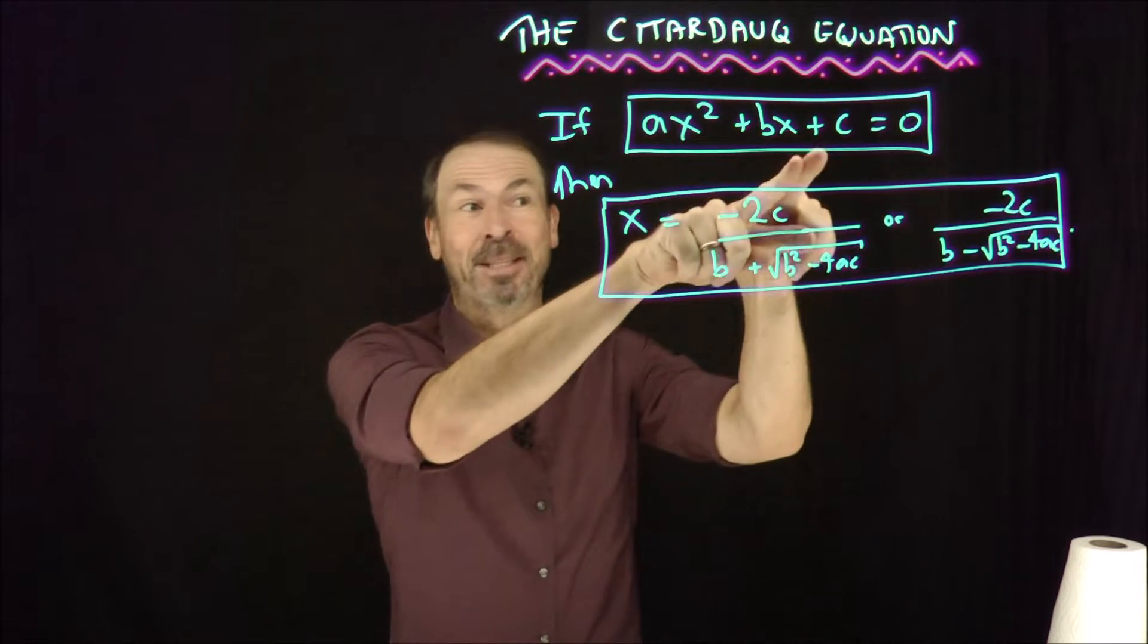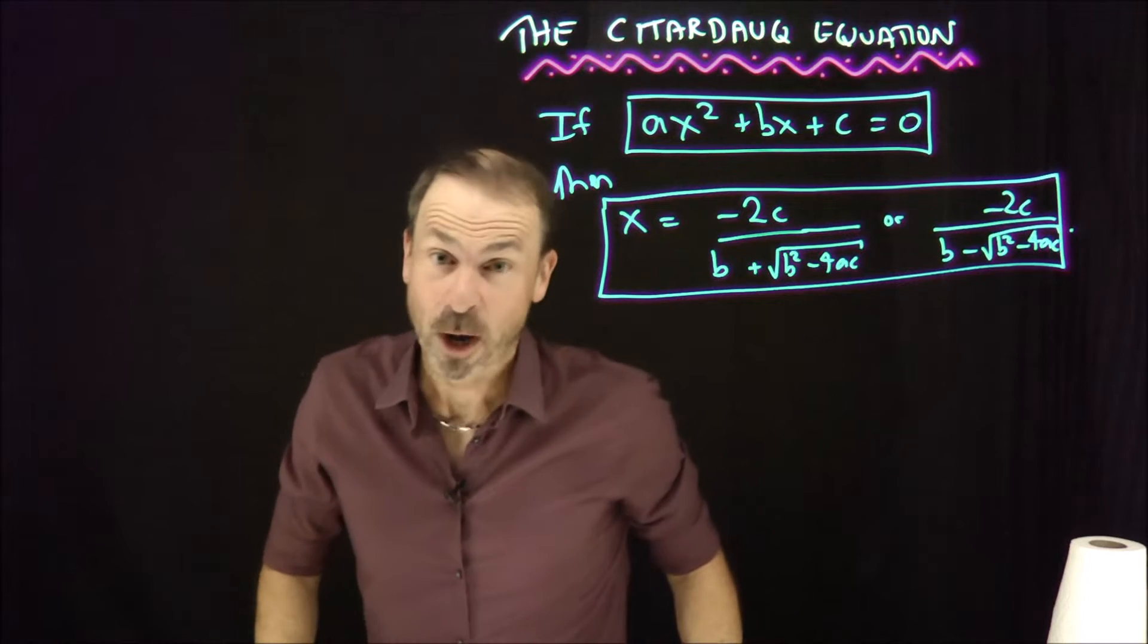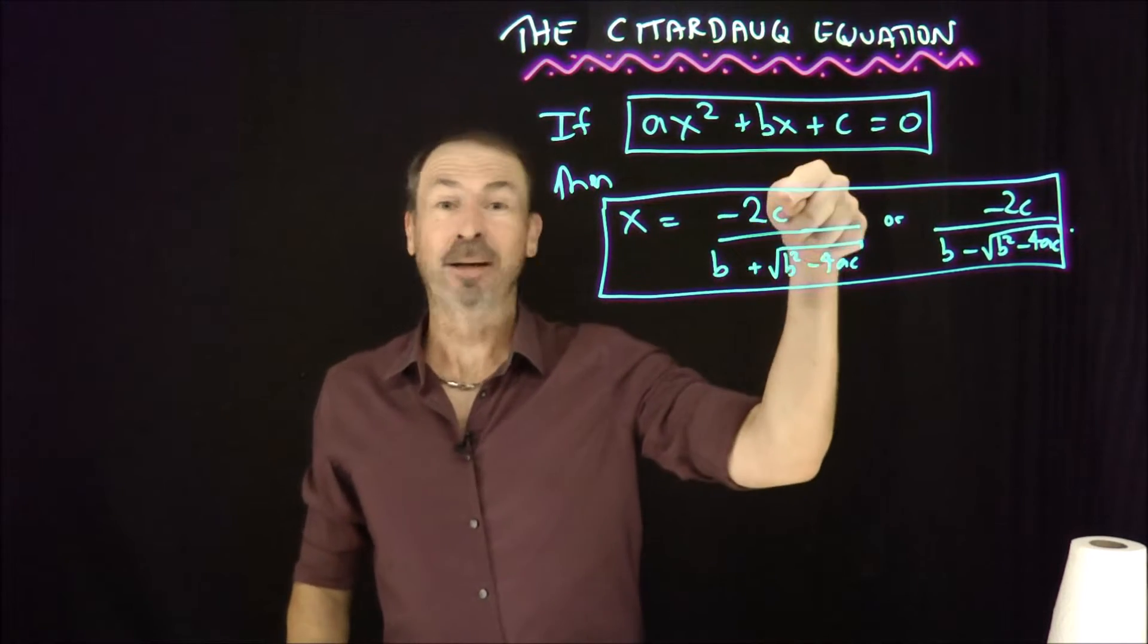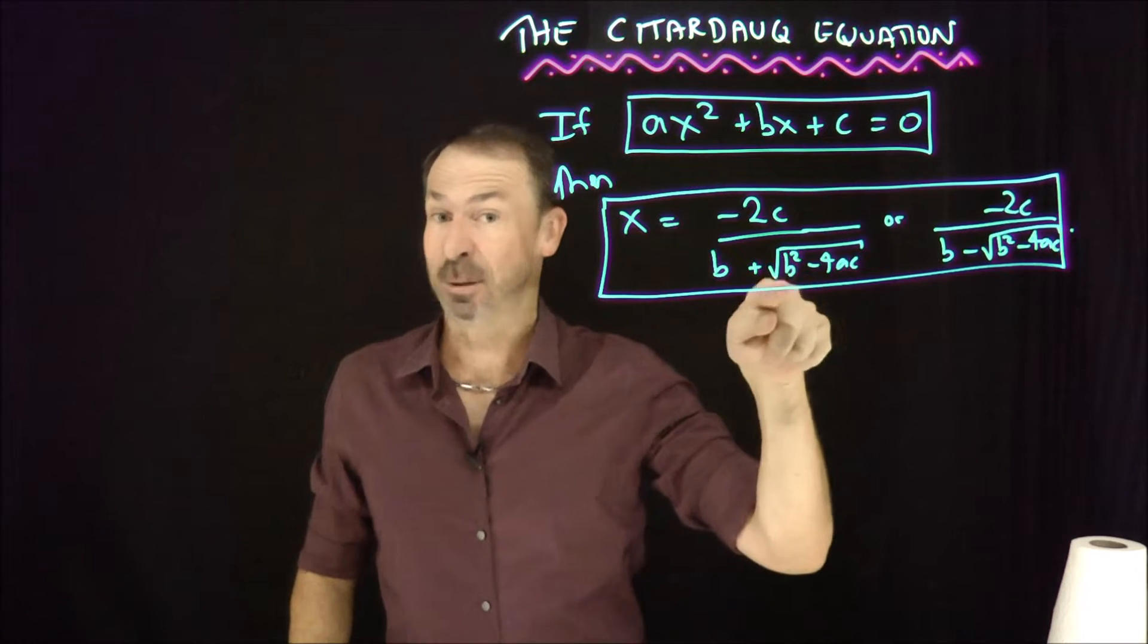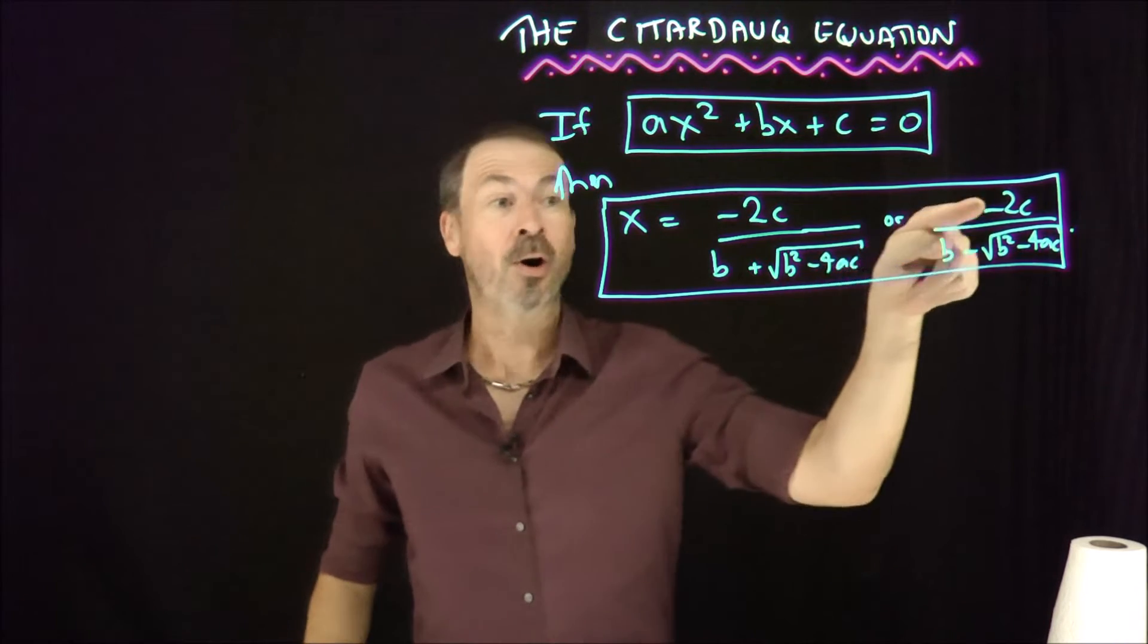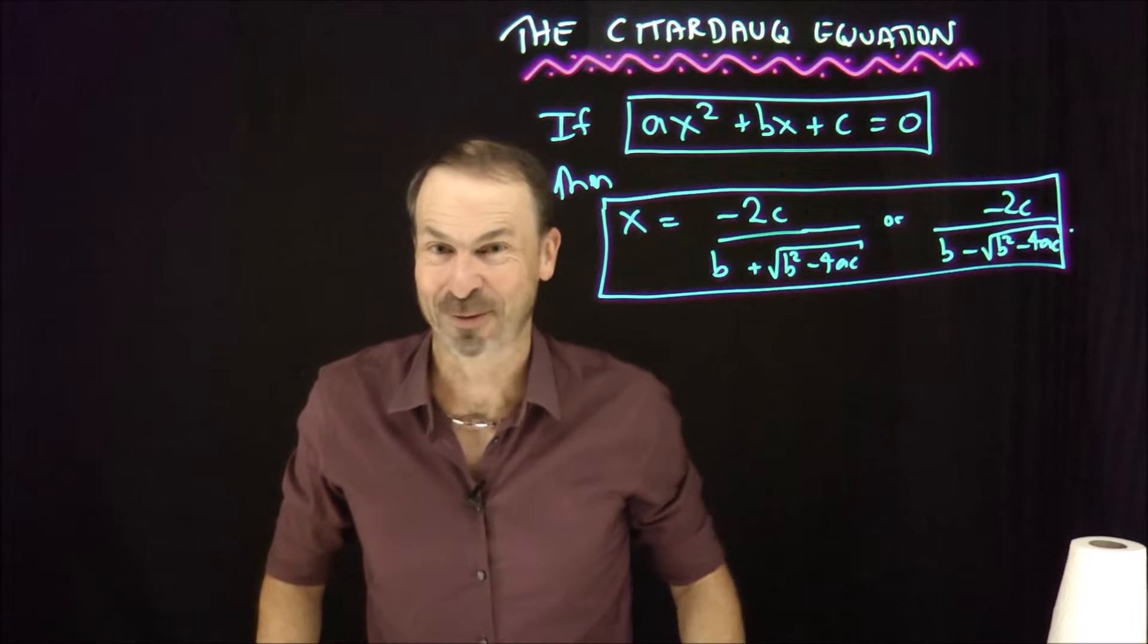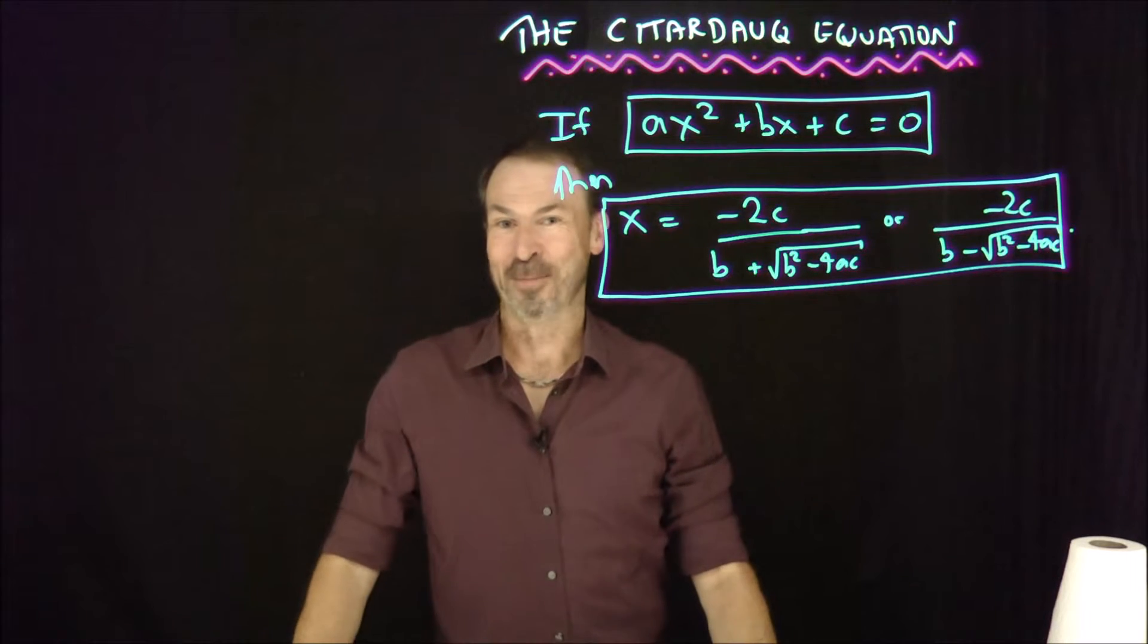If ax² + bx + c = 0 is the quadratic equation you'd like to solve, then the solutions apparently are x = -2c / (b + √(b² - 4ac)) or x = -2c / (b - √(b² - 4ac)). The Ceta-Dorc formula.